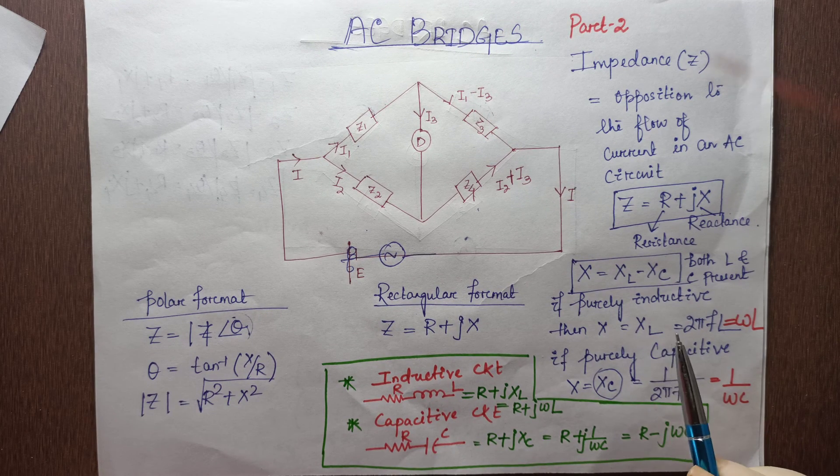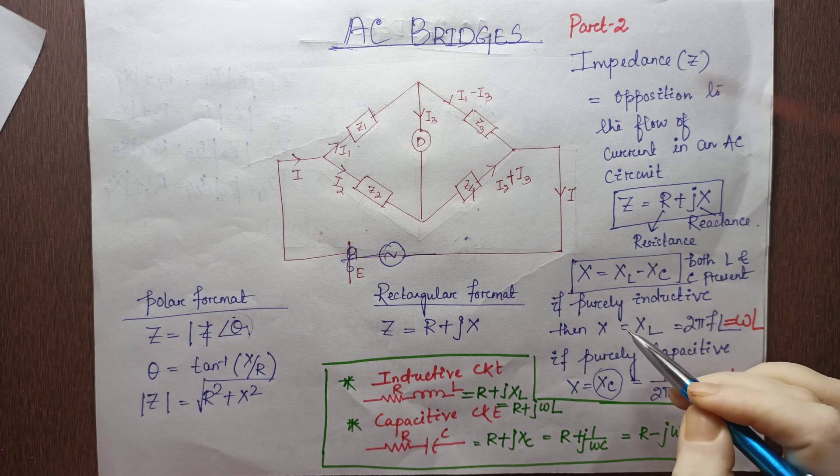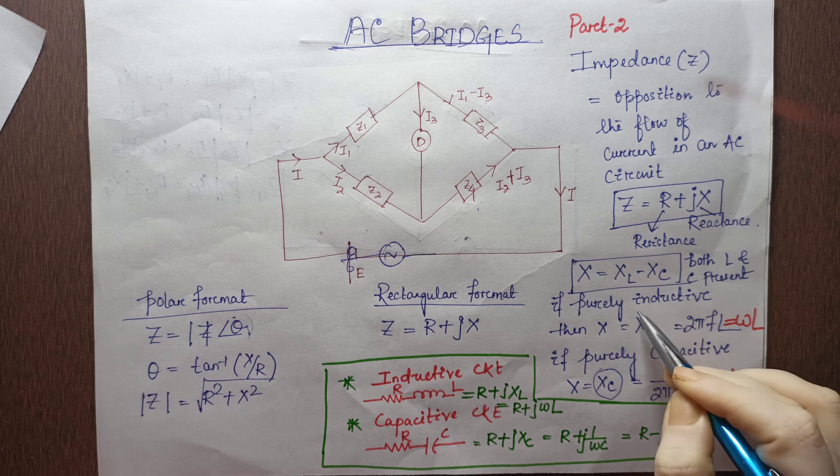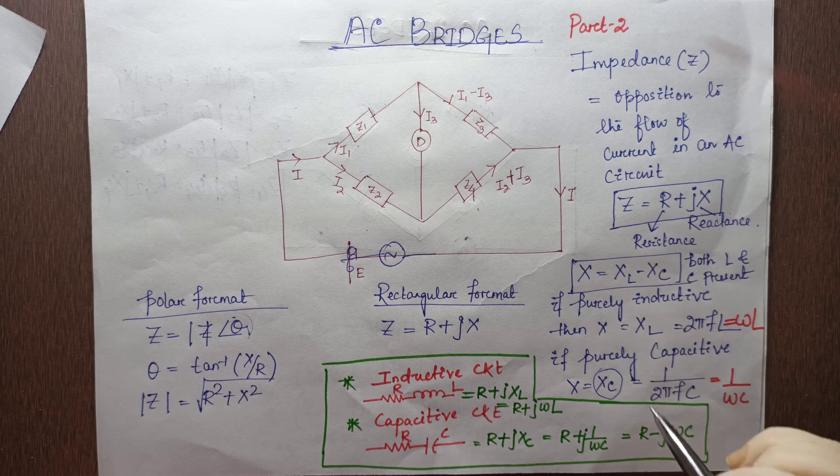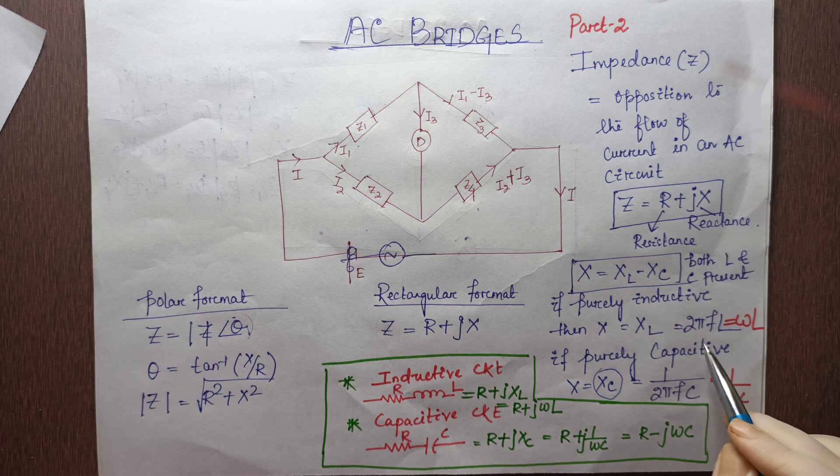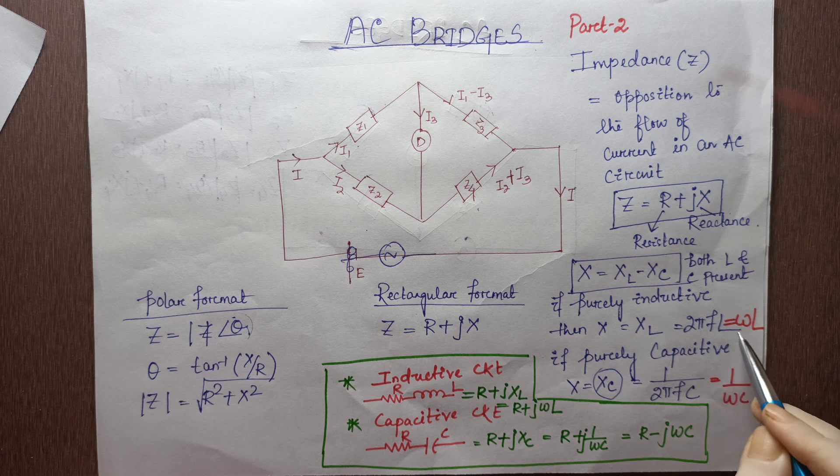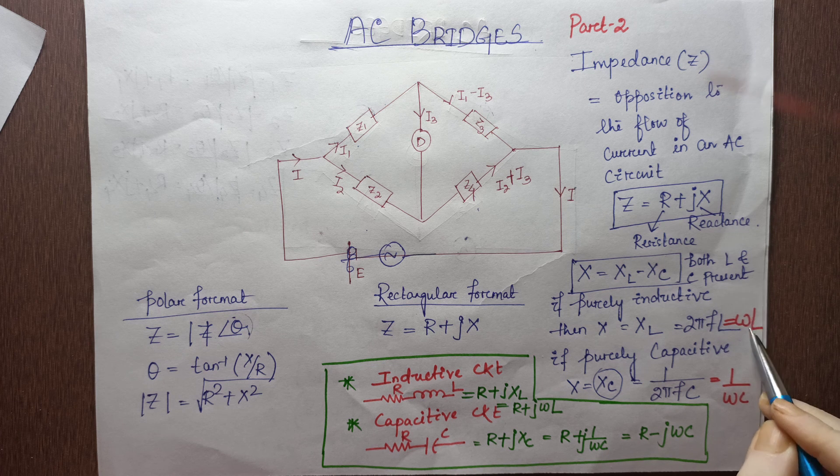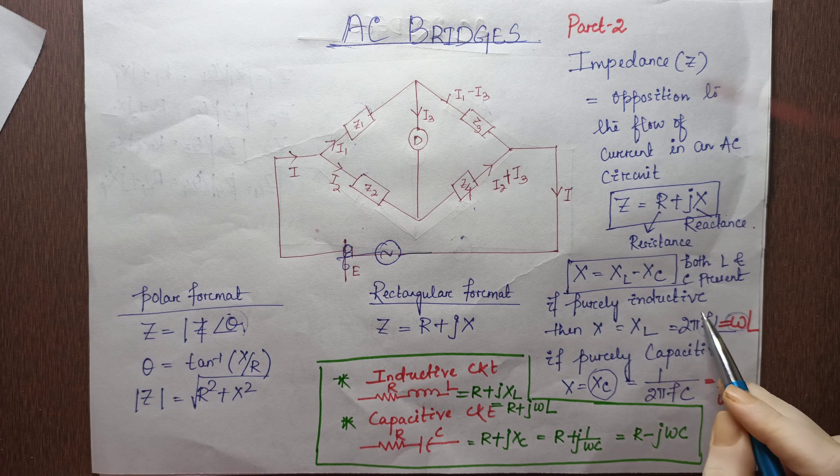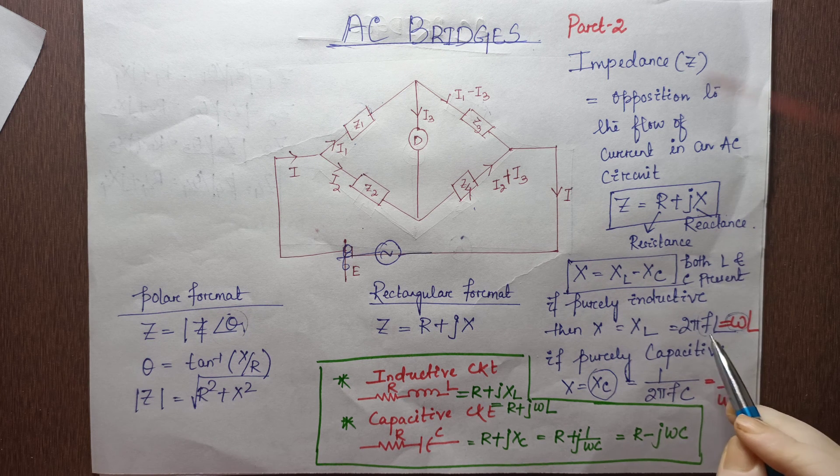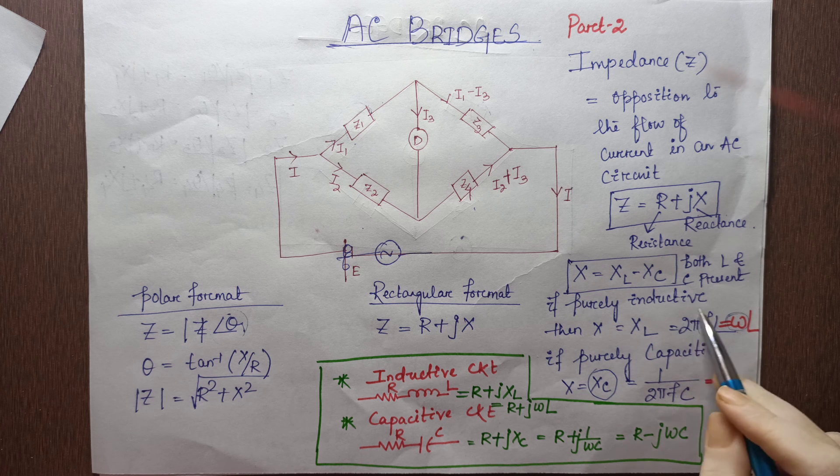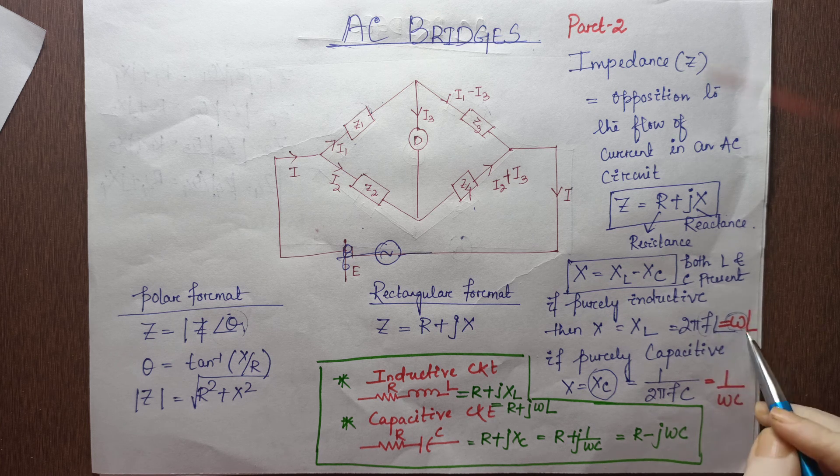When it is represented by the term XL, then it is called an inductive circuit. XL is equal to 2πFL, which is also written as ωL, where ω is the angular frequency and F is the linear frequency. The relation between ω and F is ω = 2πF, and L remains the same.